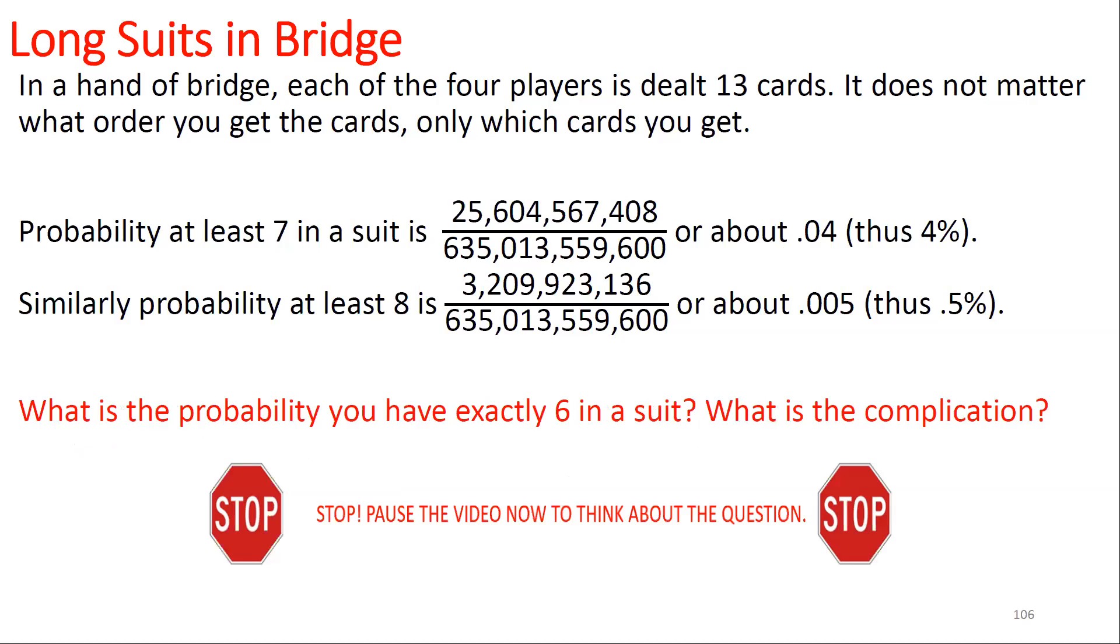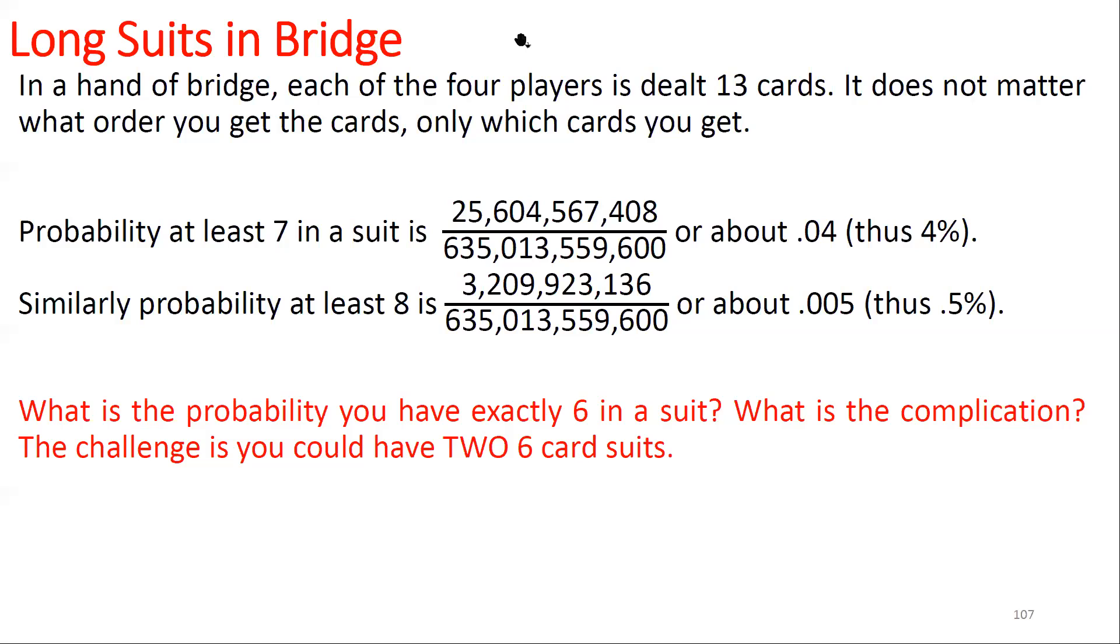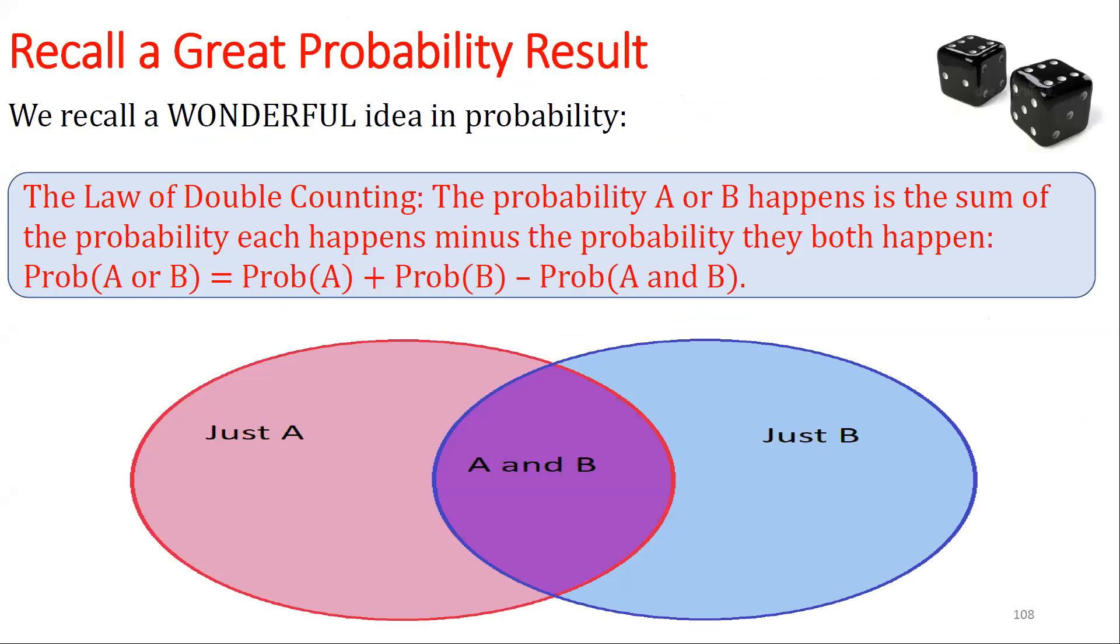So what is the probability you have exactly 6 in a suit? What is the complication? The complication is that we could have two 6-card suits. We have to figure out how to handle it. We could have two 6-card suits, and so it's not just choosing 13C6. We've got to be careful for the remaining 39 cards that we don't choose 6 of them from the same suit. So we're going to use a great result we talked about in the last lecture: the law of double counting. The probability that A or B or both happen is the probability that A happens plus the probability B happens minus the probability they both happen, because we double count them.